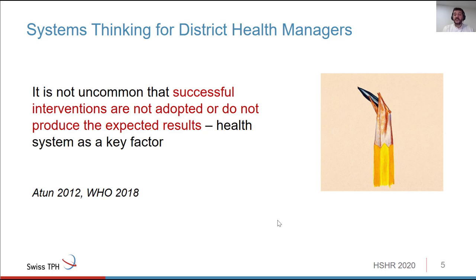This session is all about unintended consequences. We hear so many times that projects that work beautifully in one setting, that are very successful, are taken to another setting and they fail — they lose effectiveness. We think that systems thinking can help you make some of those unintended consequences predictable, and you can prevent them if you know them in advance.